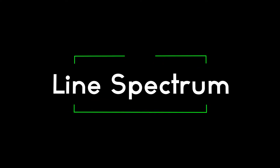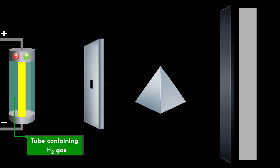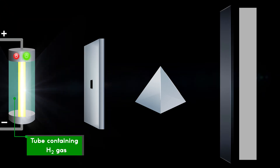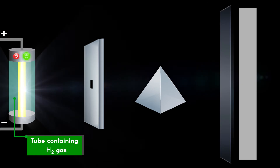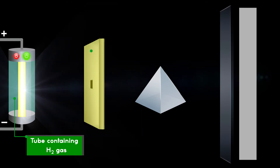To understand line spectrum, consider a discharge tube filled with hydrogen gas. The discharge tube is connected to a source supplying high voltage across it. This high voltage electrical discharge energizes the gaseous atoms, and light of specific wavelengths is emitted from the tube.